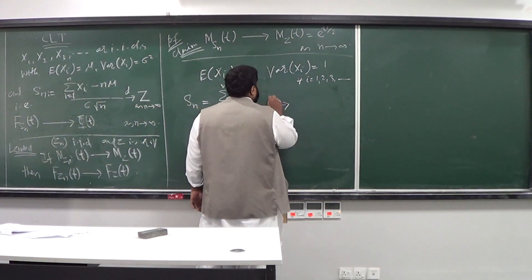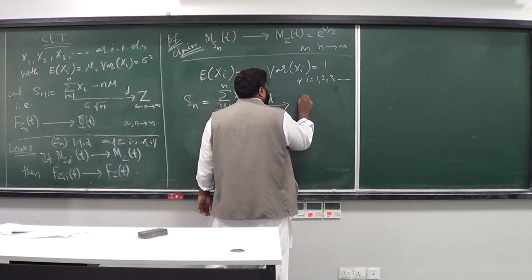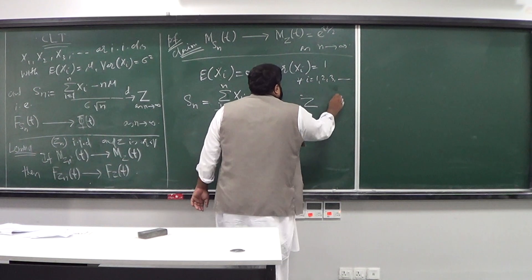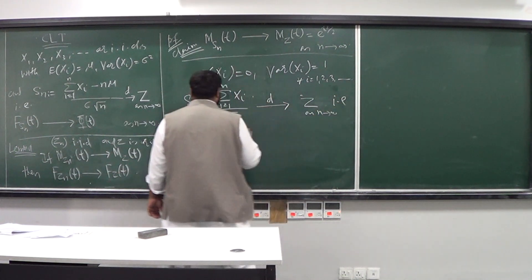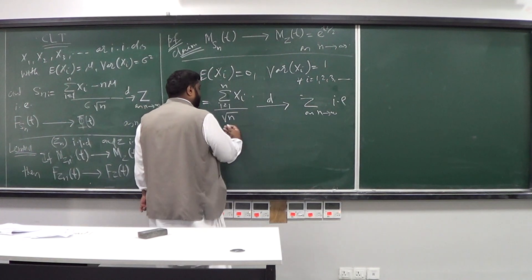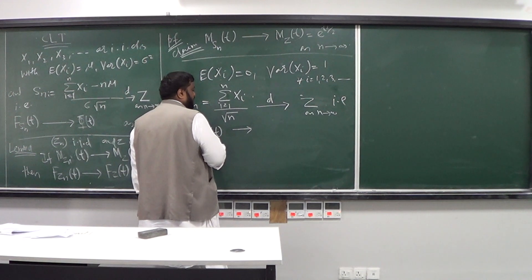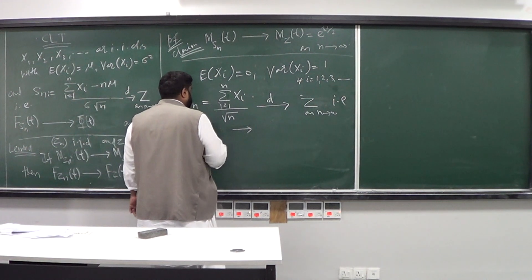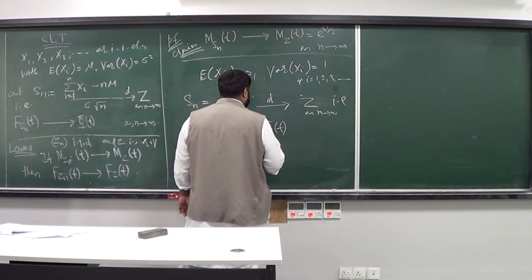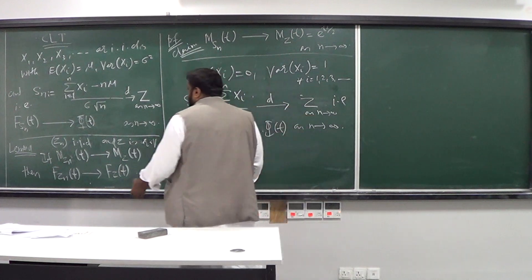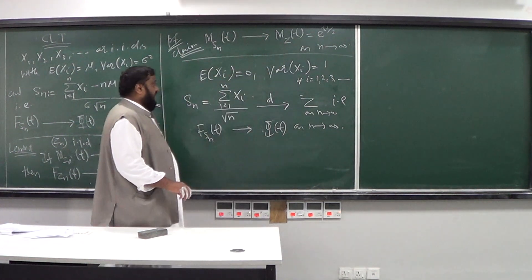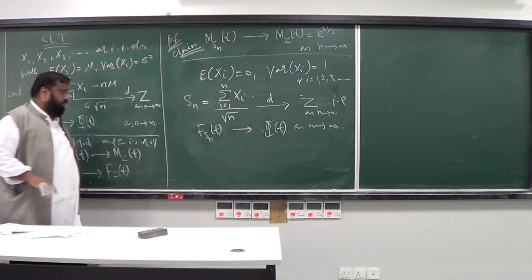I want to show that this sequence converges in distribution to the standard normal — that is, the moment generating function of this standardized sum converges to the distribution function of the standard normal as n goes to infinity. By this lemma, it is sufficient to show that the MGF of S_n converges to the MGF of Z. So let's start computing the moment generating function of S_n.